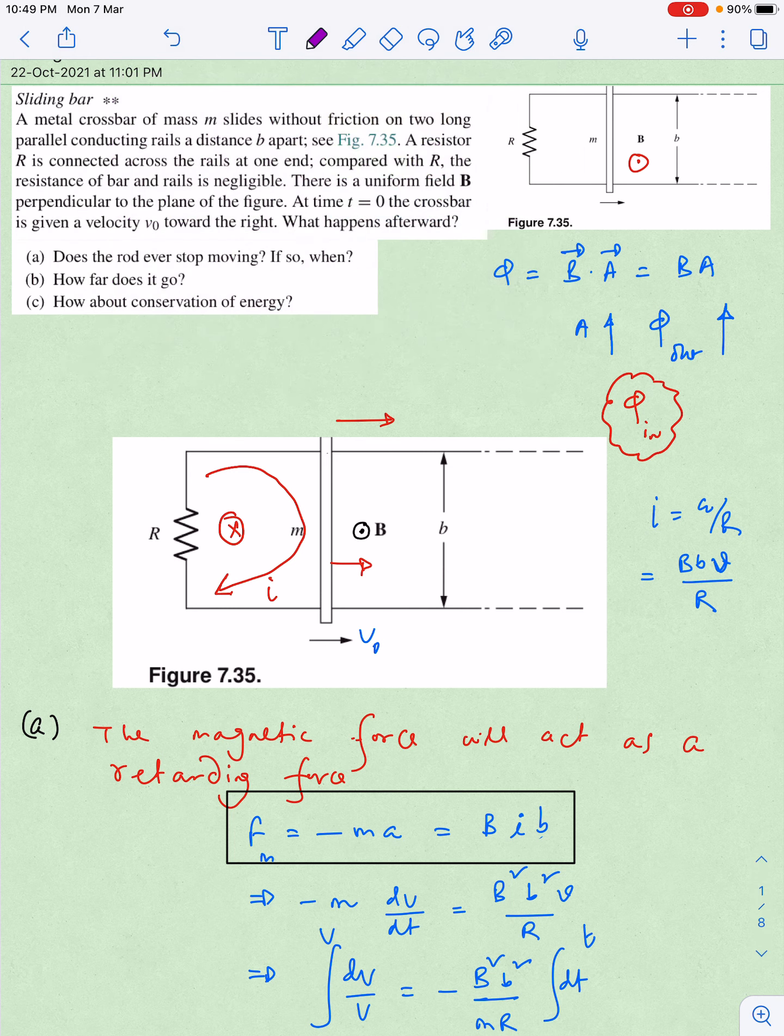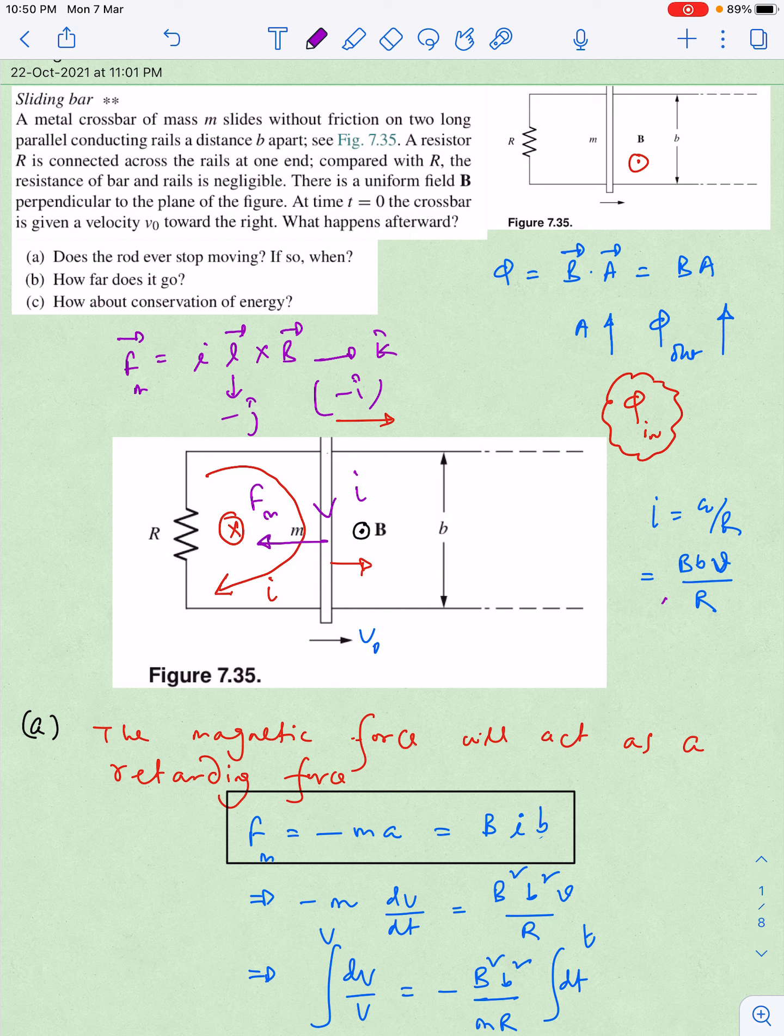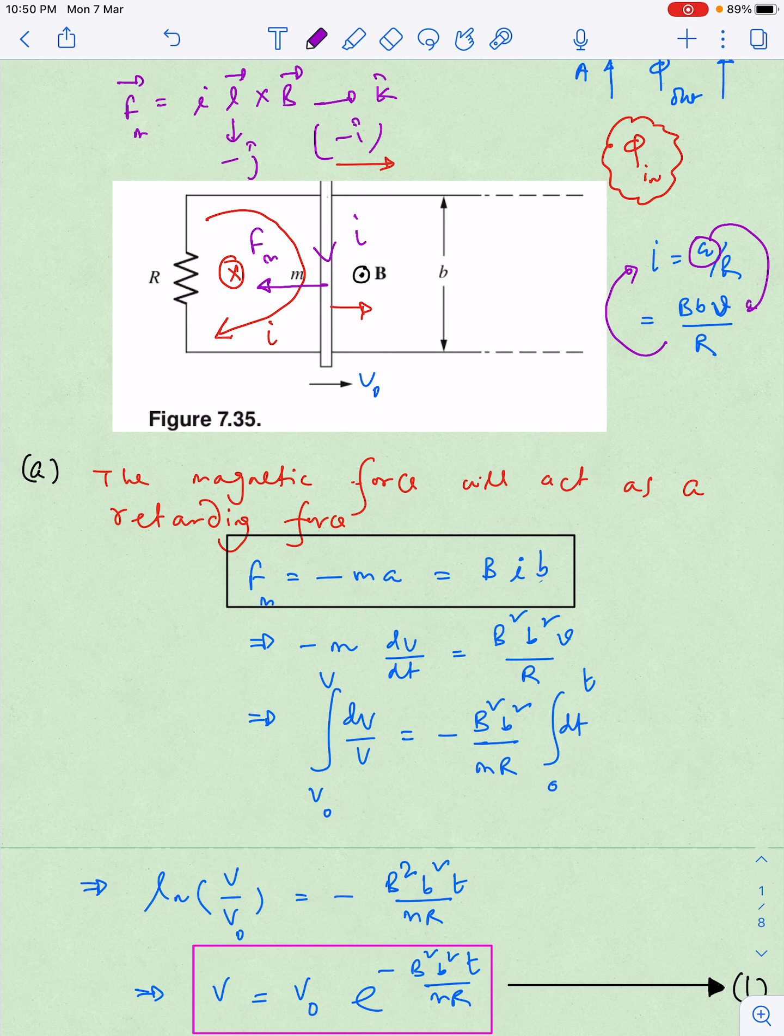So if I apply magnetic force that is acting on the rod, that is equal to i l cross B. So l vector is along minus j cap and B vector is along plus k cap. Minus j cross k becomes minus i cap, so basically in this direction magnetic force will act which is basically a resistive force. And motional EMF we know that simply E is equal to capital B small b into v divided by R, that is the current. So this is EMF and divided by resistance is the current.